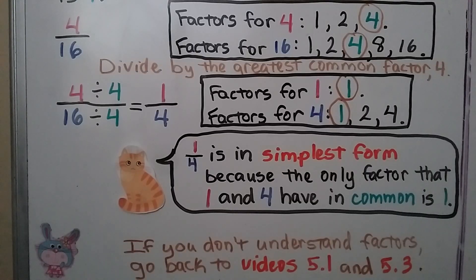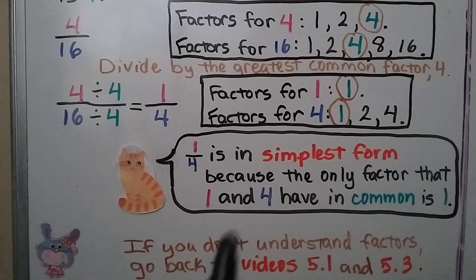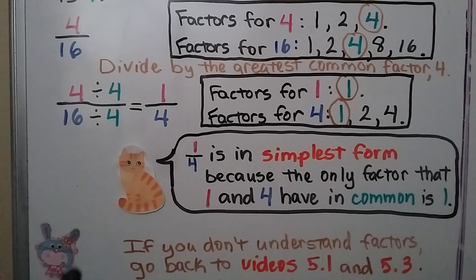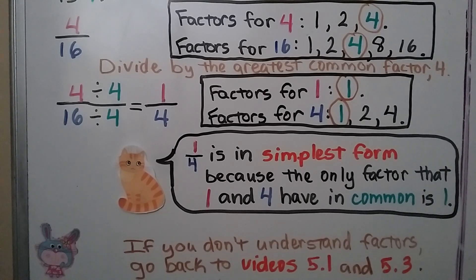One-fourth is in its simplest form because the only factor one and four have in common is one. If you don't understand factors, go back to videos 5.1 and 5.3, which are linked in the description, and they'll explain factors to you.